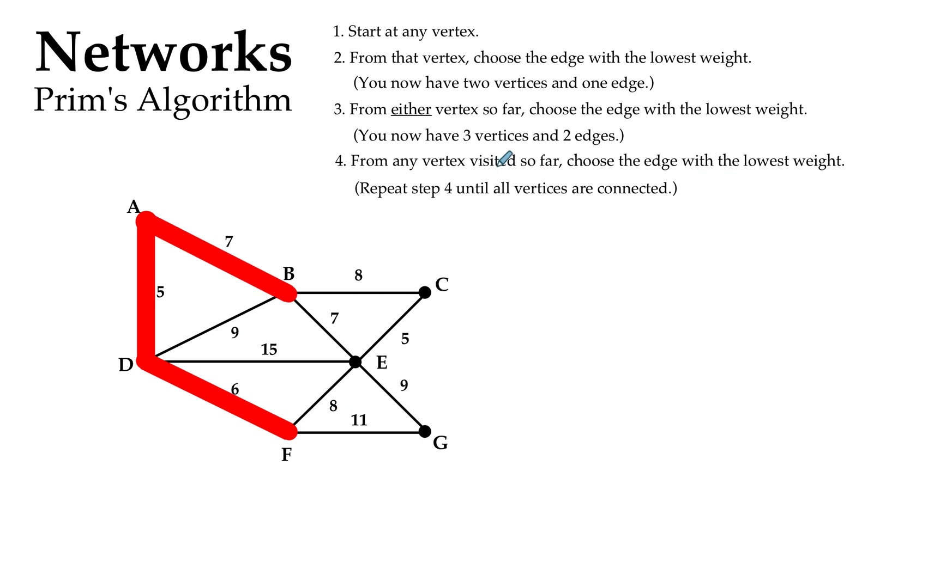Once again, I'm repeating step 4: from any vertex visited so far, choose the one with the lowest weight. Now I have already collected vertex A, B, D, and F.